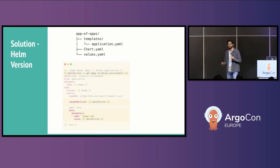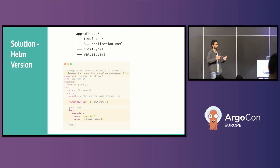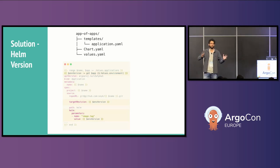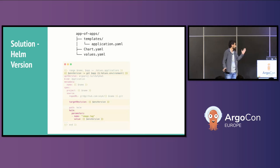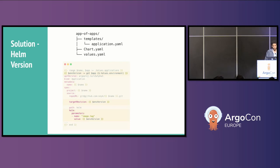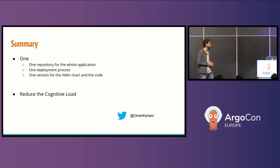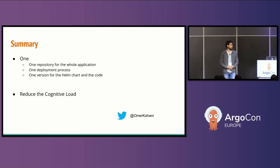That solved the problem, and we also got an amazing additional benefit: we now have a version for the Helm chart itself. We're no longer tracking main for the Helm template, and we don't need to set different branches for different environments or find weird ways to deploy the repository. We can use the same version and have the Helm chart versioned alongside the application code. With that, we reduced the cognitive load of our developers, allowing them to work on only one repository with one deployment pipeline and one version of the Helm chart. Thank you.